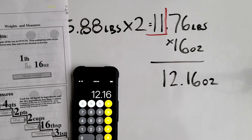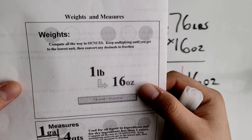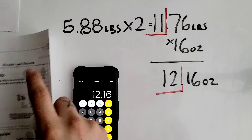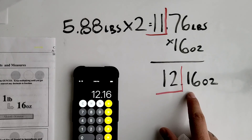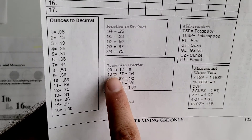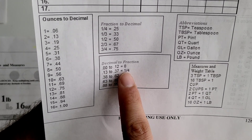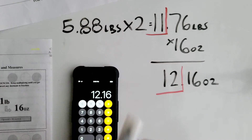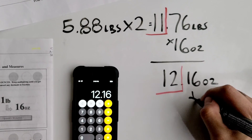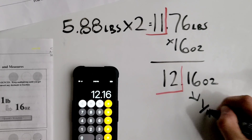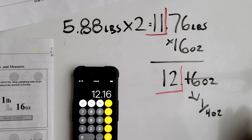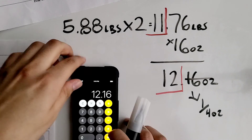We block off the whole number 12. Since we're at the lowest unit — ounces — we go to our decimal-to-fraction chart, which is right here, to determine where 0.16 falls. So 0.16 falls between two values on the chart, and it ends up being one fourth. So 0.16 ounces is one fourth ounce. Now we bring all our numbers together.